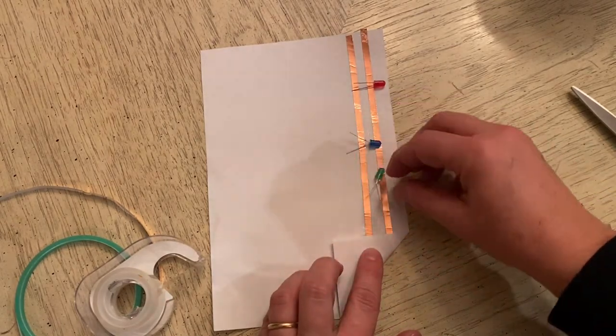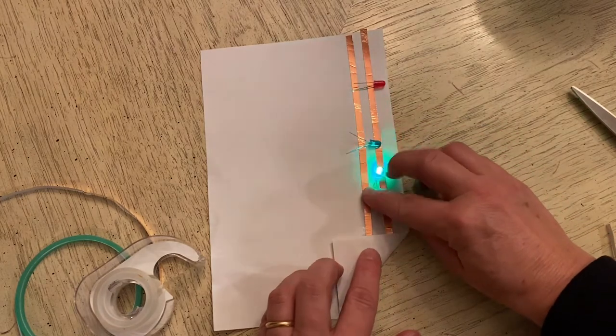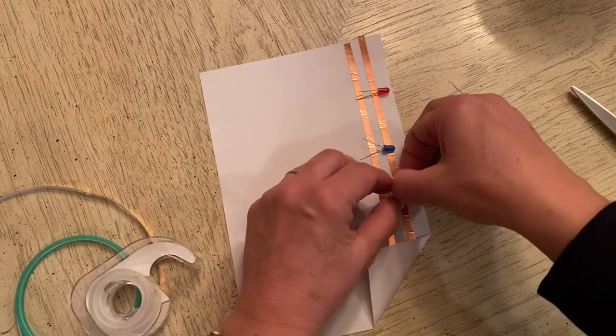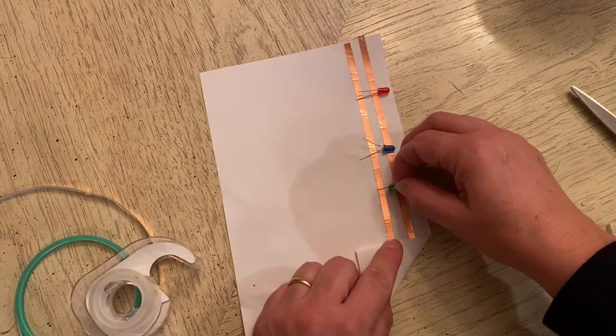Alright, so when I poke the hole and put my green light through the hole, I have to keep the positive side on this side. I can't turn it around. So I know I need to poke it in this way.